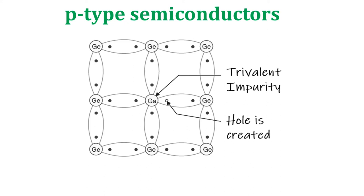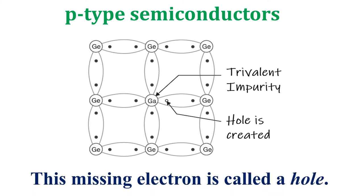With neighboring germanium atoms. In other words, the 4th bond is incomplete, being short of 1 electron. This missing electron is called a hole.